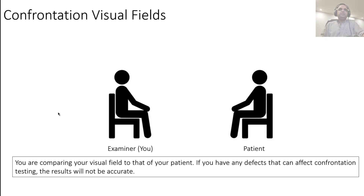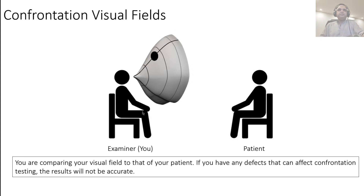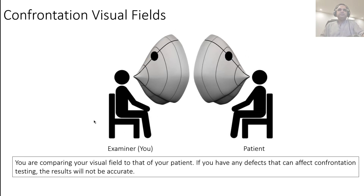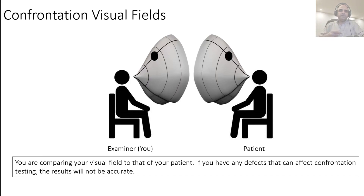One method of visual field testing is confrontation, which is essentially comparing your hill of vision to that of your patient's hill of vision — your visual field against your patient's visual field. If you have defects yourself, you cannot accurately test your patient's visual fields. So if you are aware of a visual field defect, inform your OSCE station faculty member that your findings might not be accurate, since this test is comparative by nature.